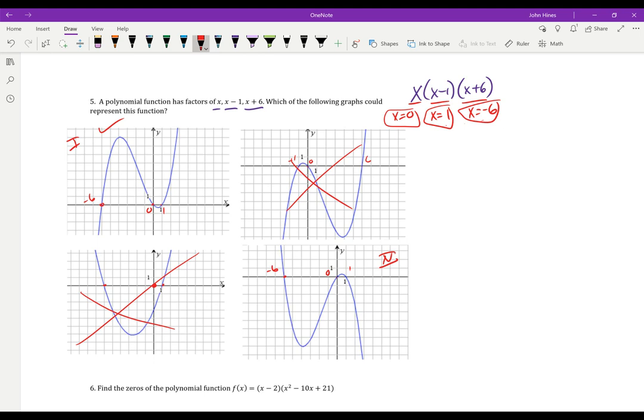So there's more than one polynomial that has these 0s. You could stretch them. You can flip them. But it's those 0s that the factors determine. The factors are directly related to the 0s.